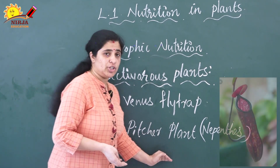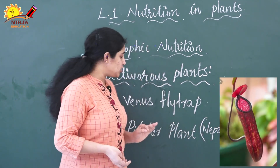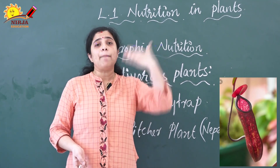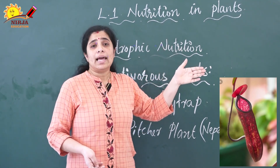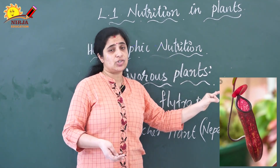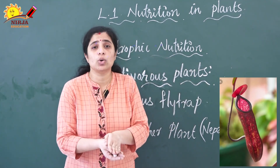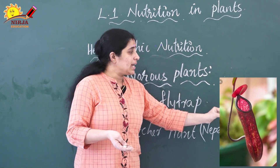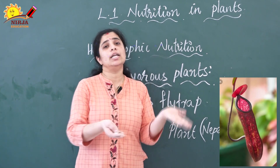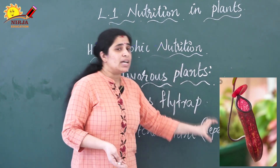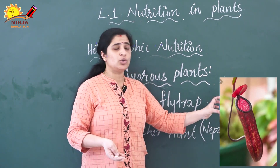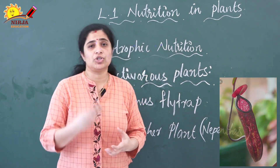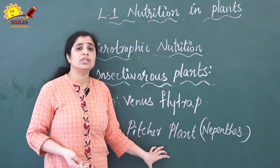The next example is the pitcher plant. In the pitcher plant, the leaves are modified into a jug-like structure, and the apex is modified into a lid-like structure. When an insect sits on the jug-like structure — the pitcher — the lid closes. Digestive juices are then secreted inside the pitcher, digesting the insect, and the plant obtains nutrients from it.